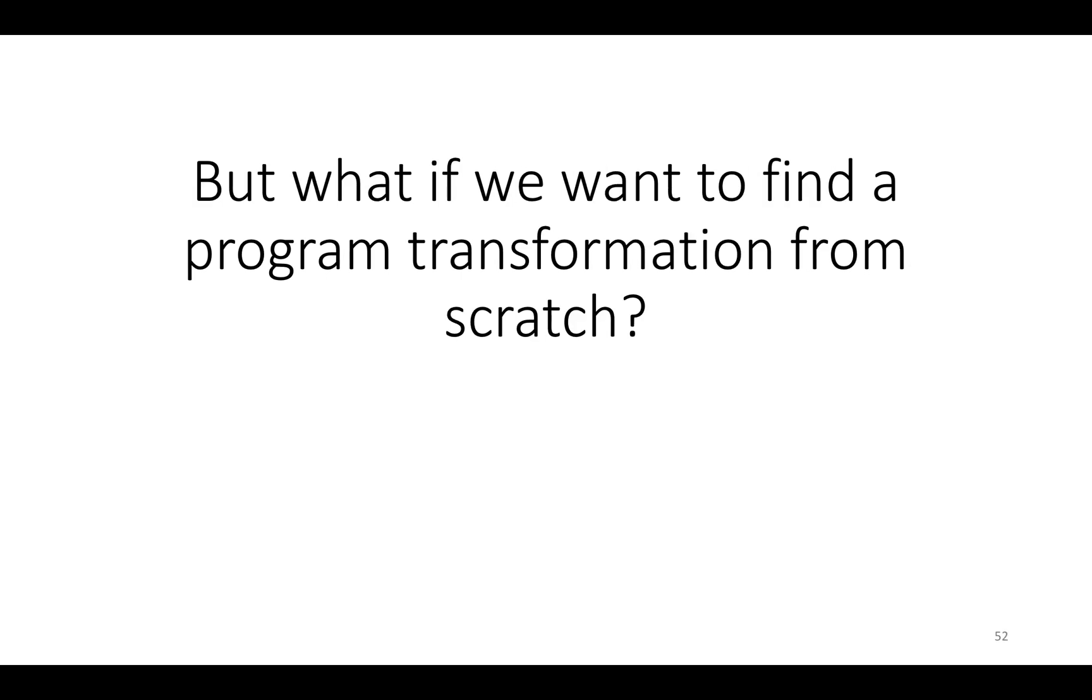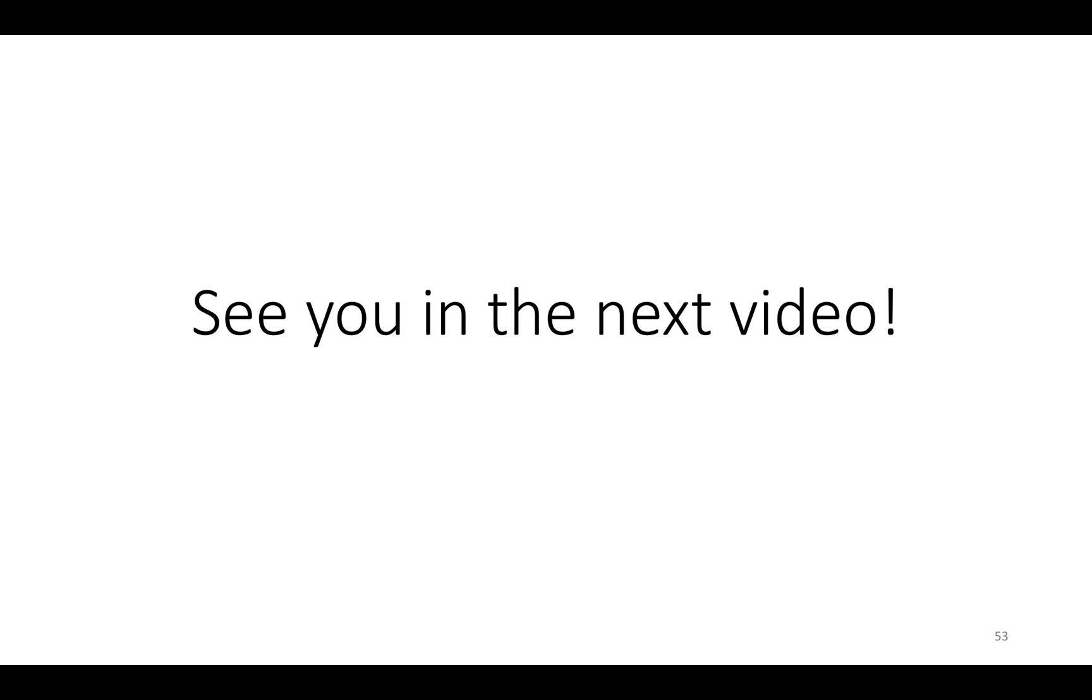So what if we want to find a program transformation from scratch? What if instead of trying to check the legality of a proposed program transformation, we actually want to find a program transformation that improves our program in some way without explicitly specifying that transformation? Maybe we just want to say, take in a program and make it have better locality or make it easier to parallelize while preserving its behavior. How do we do that kind of thing? And that's actually something the polyhedral model can also do for you. And it's a more complicated topic that we'll address in the next video. So we'll see you then.